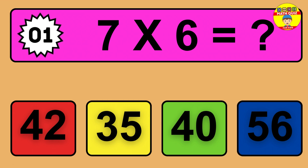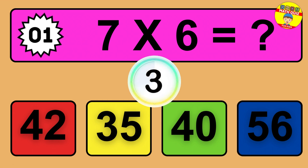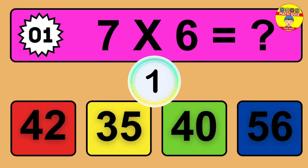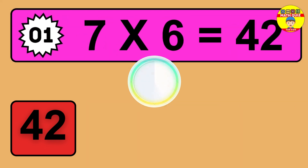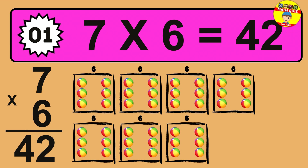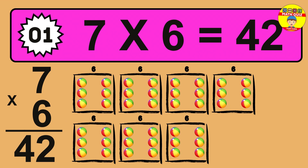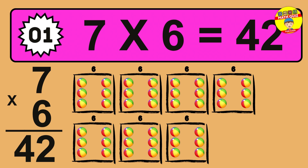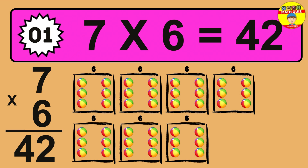Question 1. 7 times 6 equals what? The answer is 7 times 6 is 42. To calculate, we have 7 groups with 6 balls each one. So how many balls do we have? 42 balls.